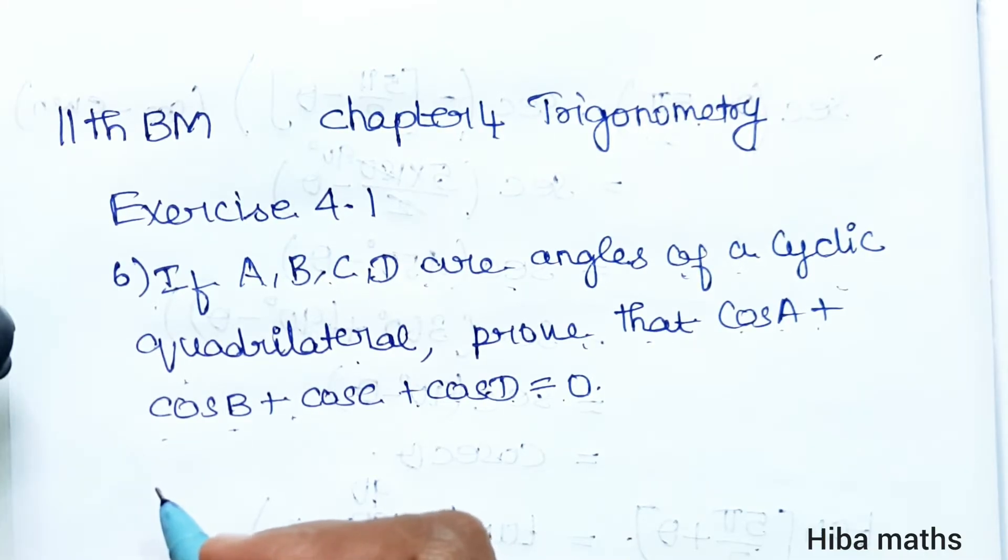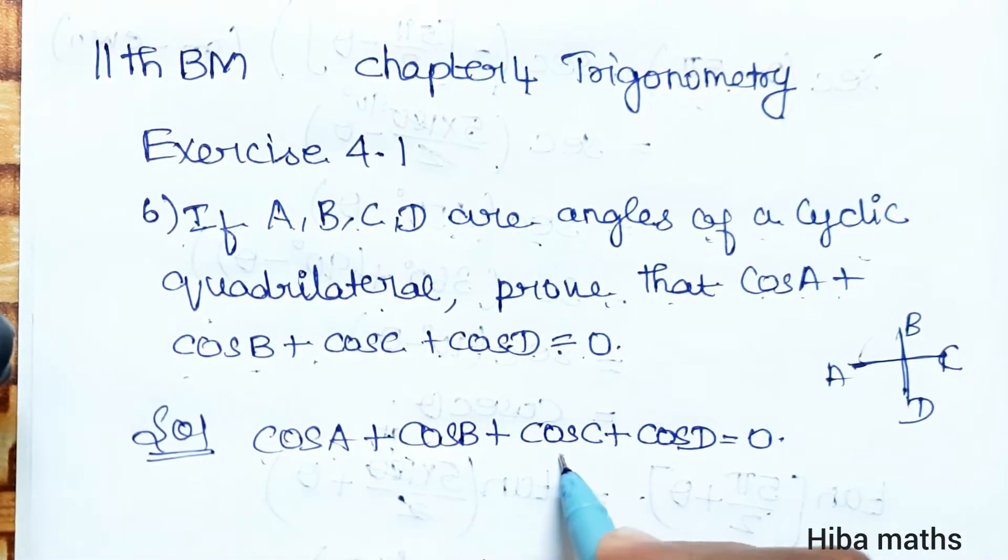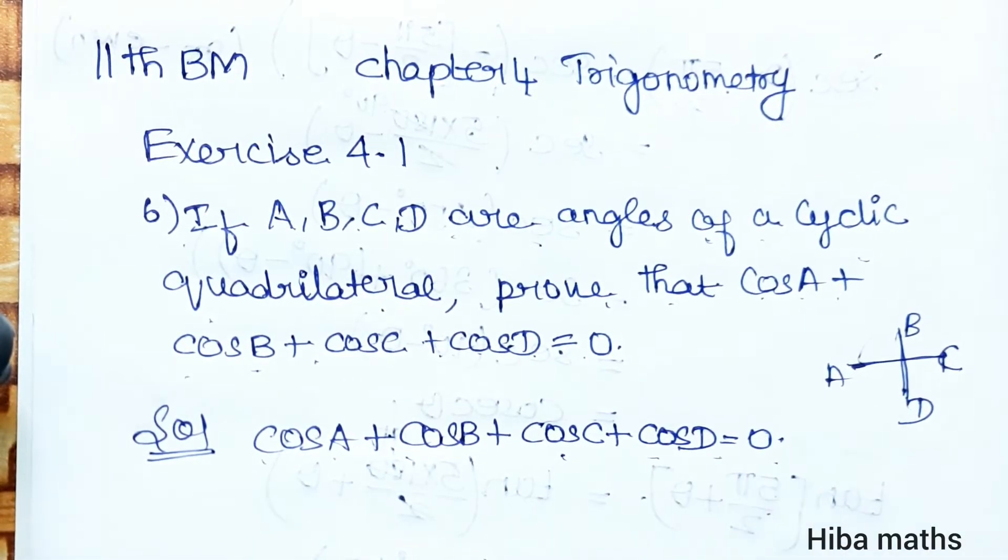A, B, C, D are the angles of cyclic quadrilateral. The solution is that cos A plus cos B plus cos C plus cos D is equal to 0.